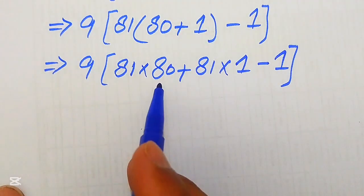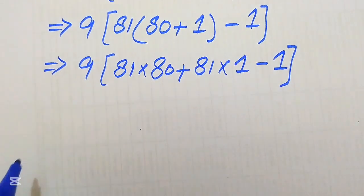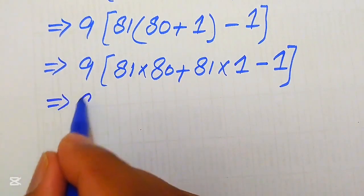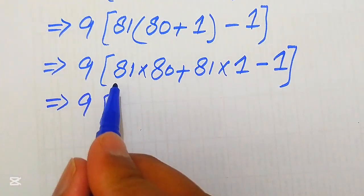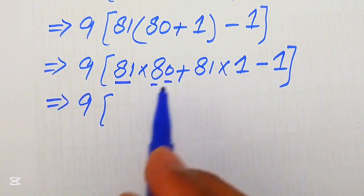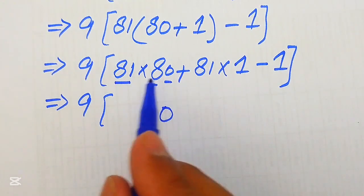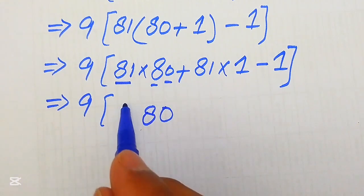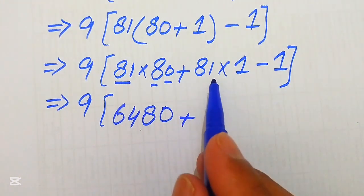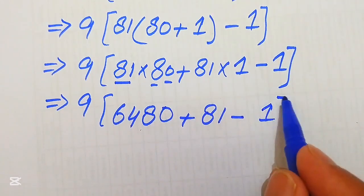Now we apply a multiplication trick for multiplying these bigger numbers. We consider 81 as composed of a 1-digit part and a 2-digit part. Multiplying: 0 times any number gives 0; 8 times 81 gives 648; and 81 times 1 equals 81. This is then subtracted by 1.